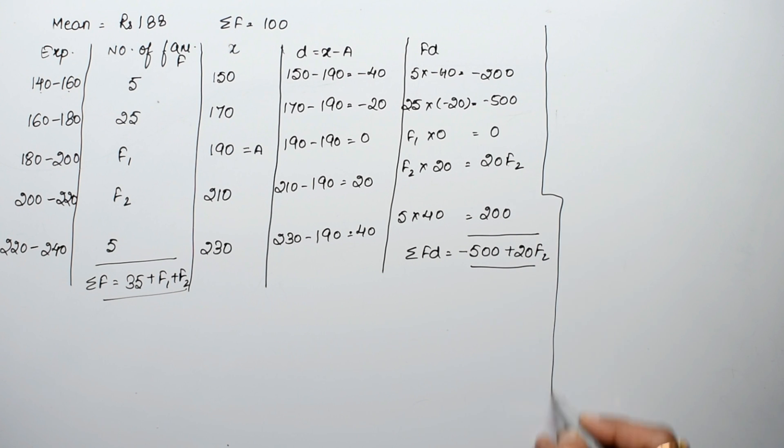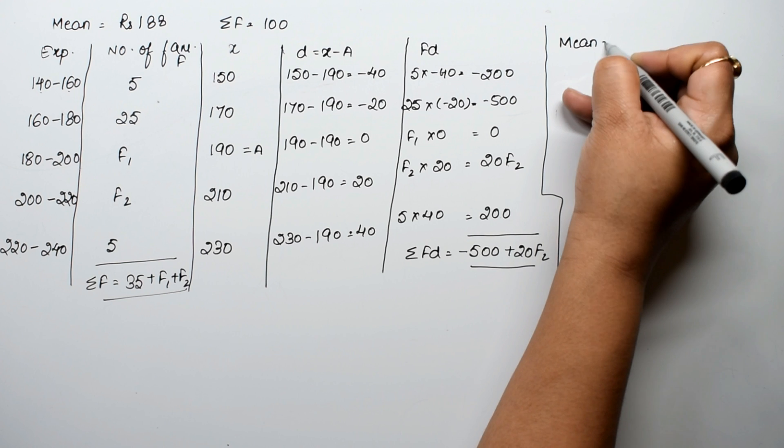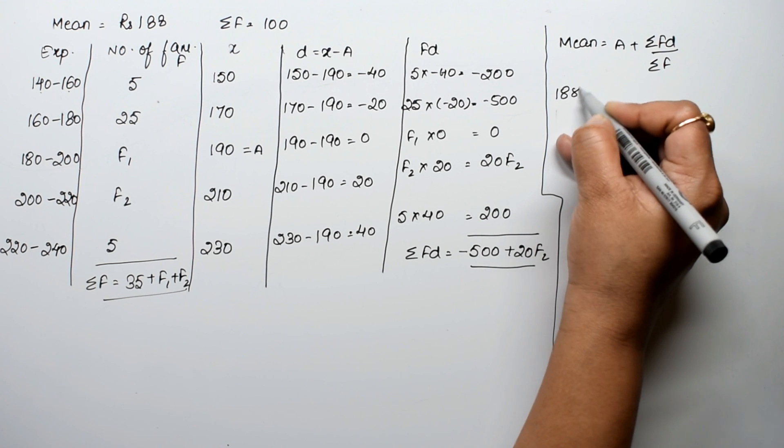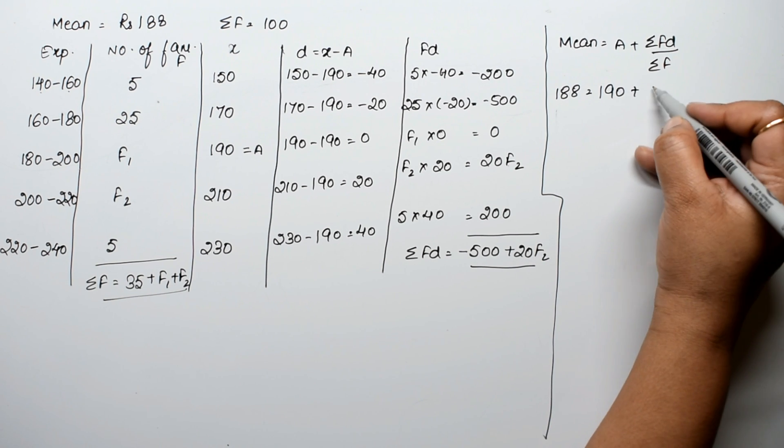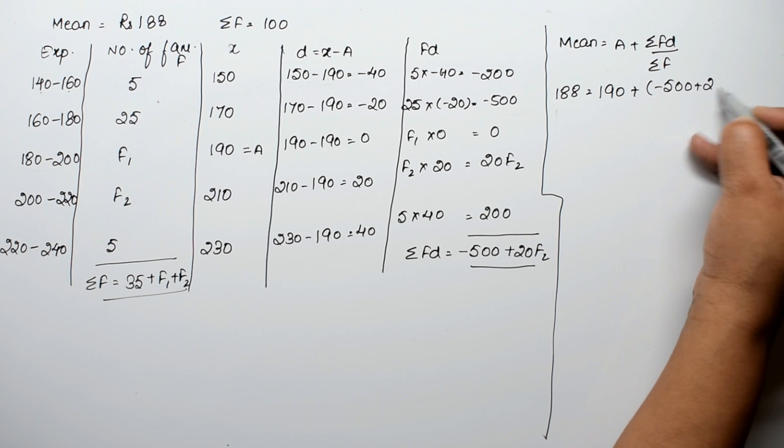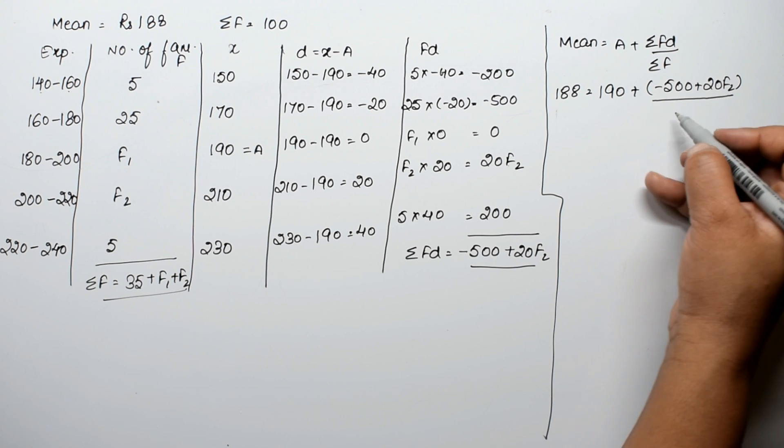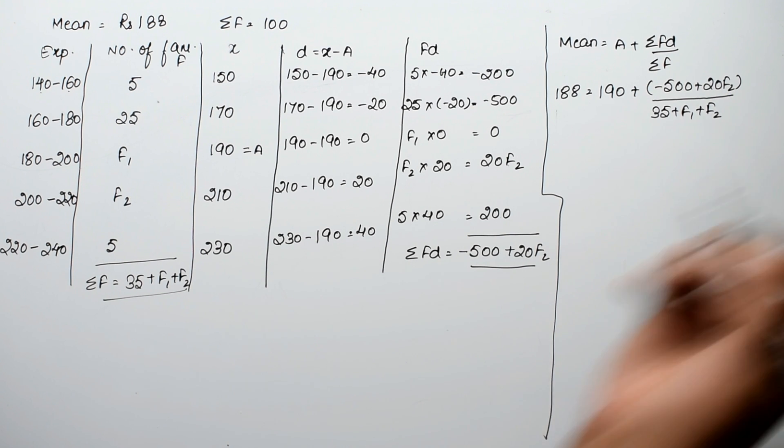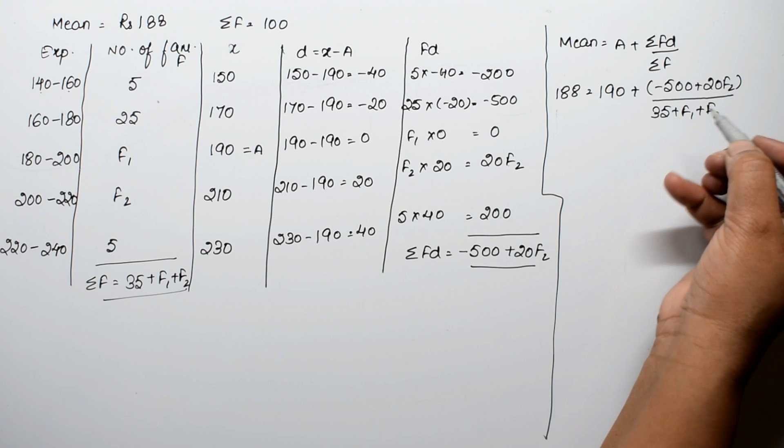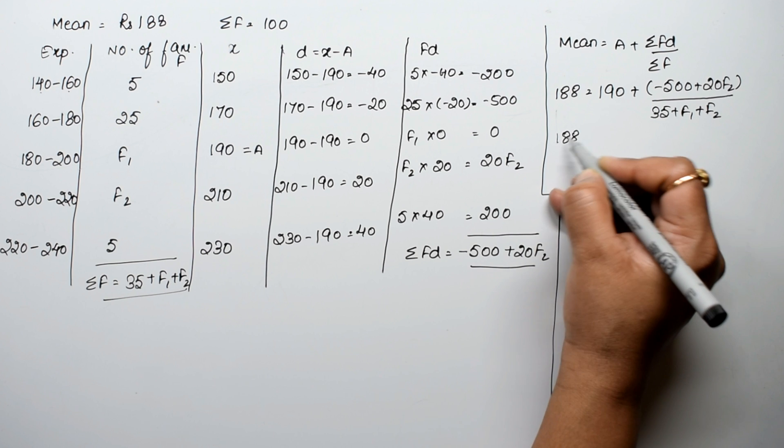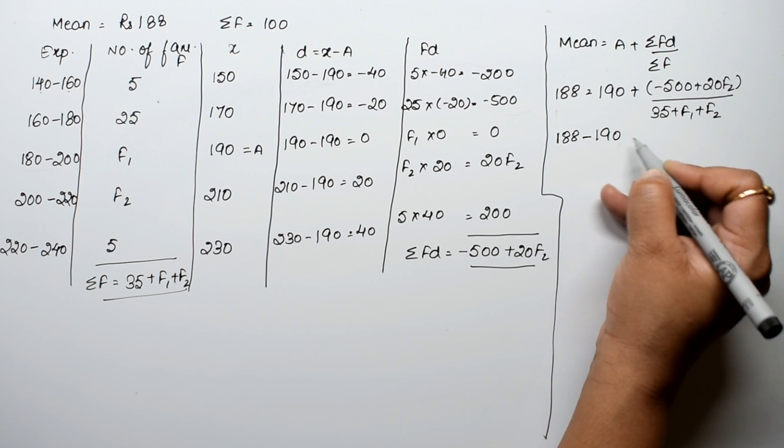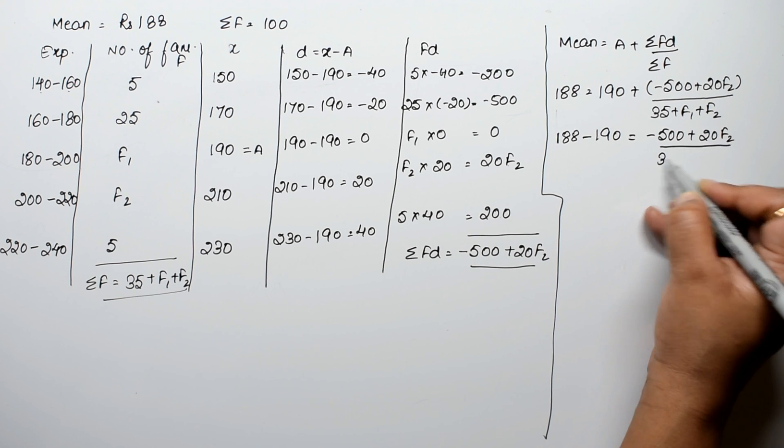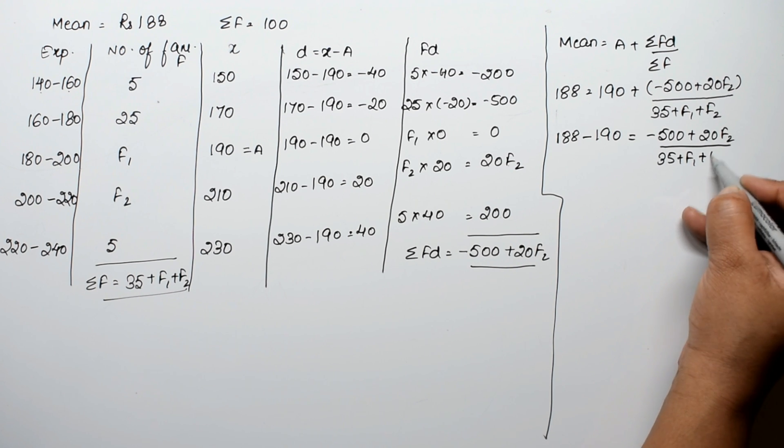Now we apply the mean formula. For the assumed mean case, mean equals a plus sigma fd upon sigma f. So 188 equals 190 plus (minus 500 plus 20F2) divided by (35 plus F1 plus F2). This gives us 188 minus 190 equals (minus 500 plus 20F2) upon (35 plus F1 plus F2).